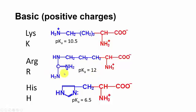Arginine is the most basic amino acid and has a guanidinium group with a pKa of 12, giving it a very strong positive charge at physiological pH. Histidine is in between — it has a pKa of 6.5 for its imidazole group, so below pH 6.5 it carries a positive charge and above 6.5 it's uncharged. However, due to the physiological environment inside a protein, histidine can carry a charge even up to around pH 7.5.